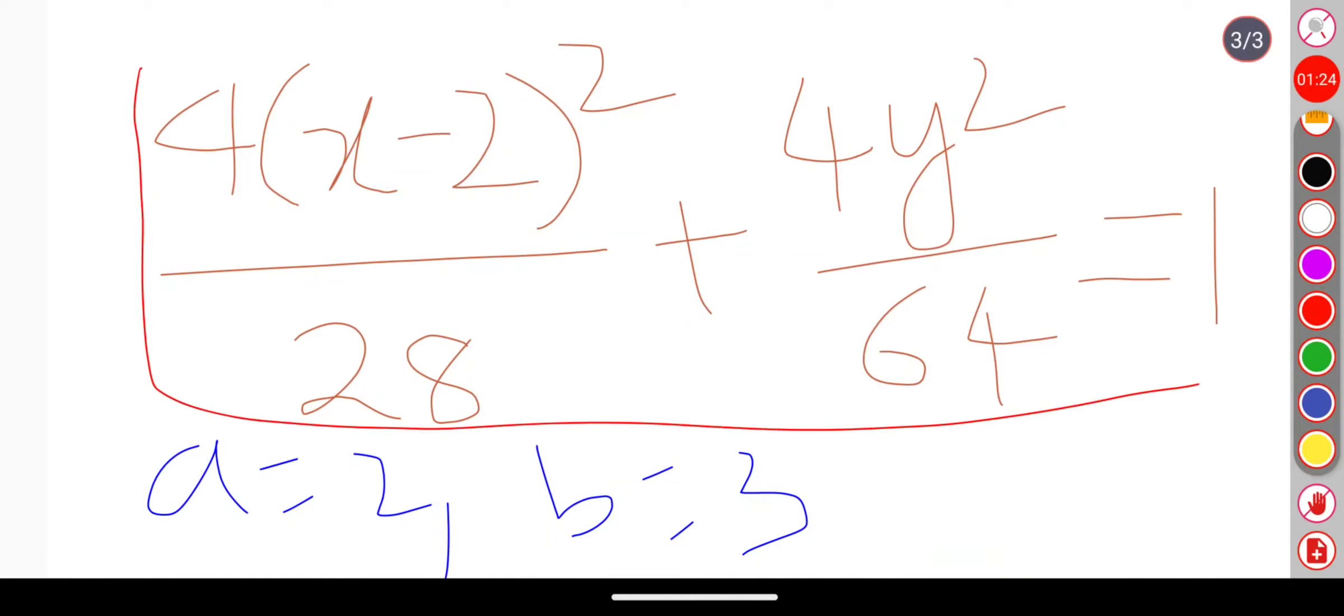When we substitute those values in the equation, we are getting the answer as 4 times (x minus 2) whole square by 28 plus 4 times y squared by 64 equals 1. That will be the answer.